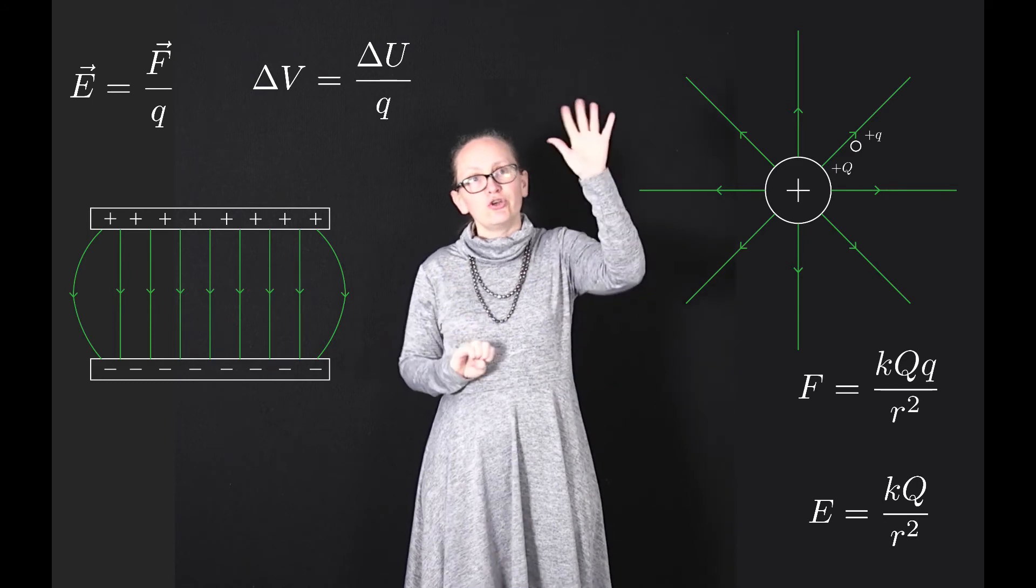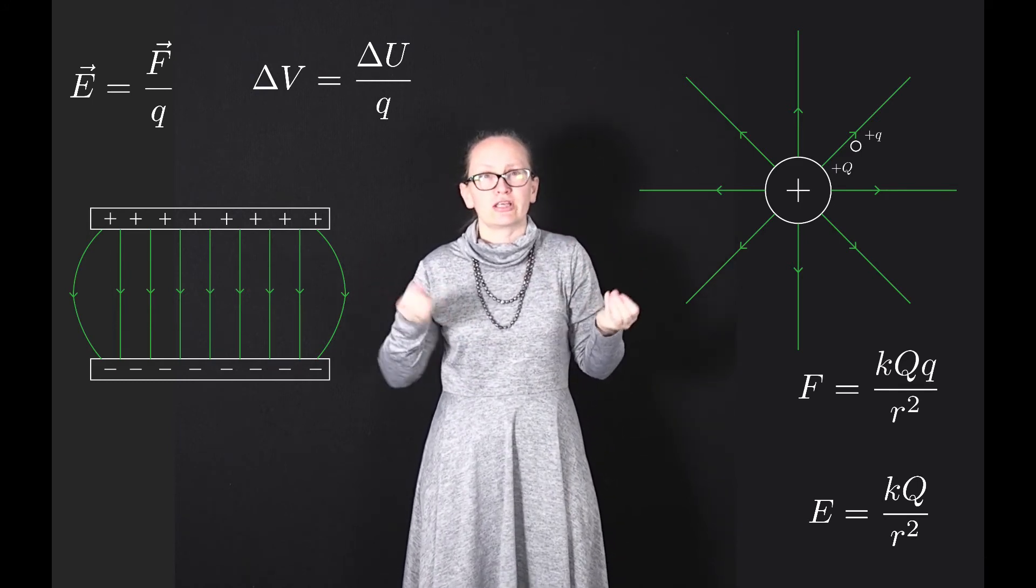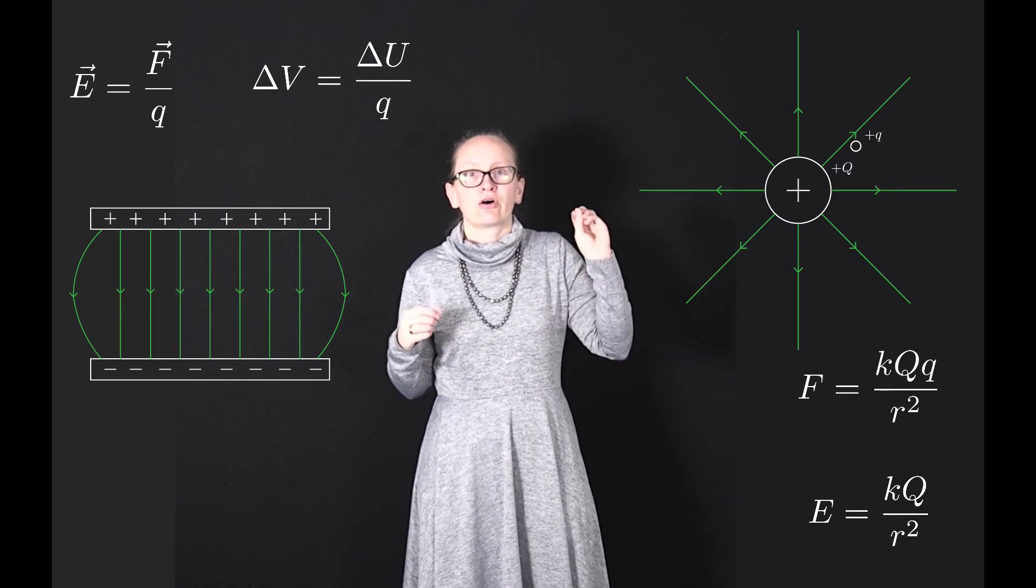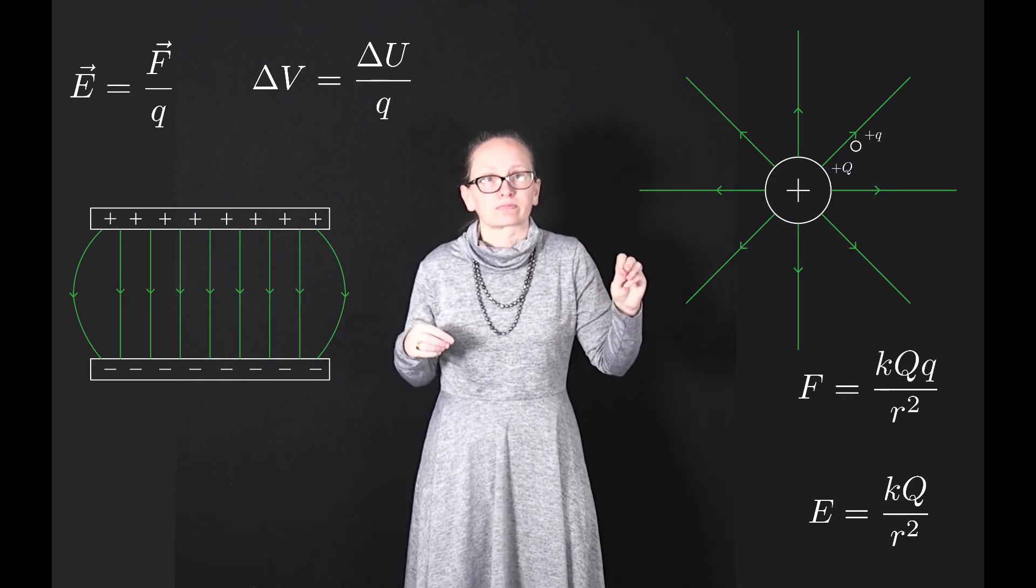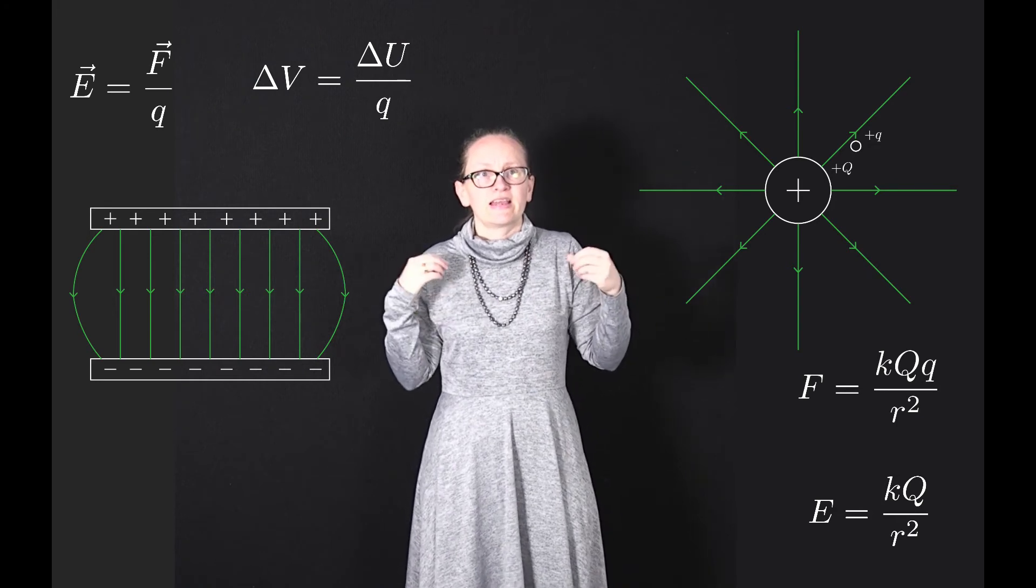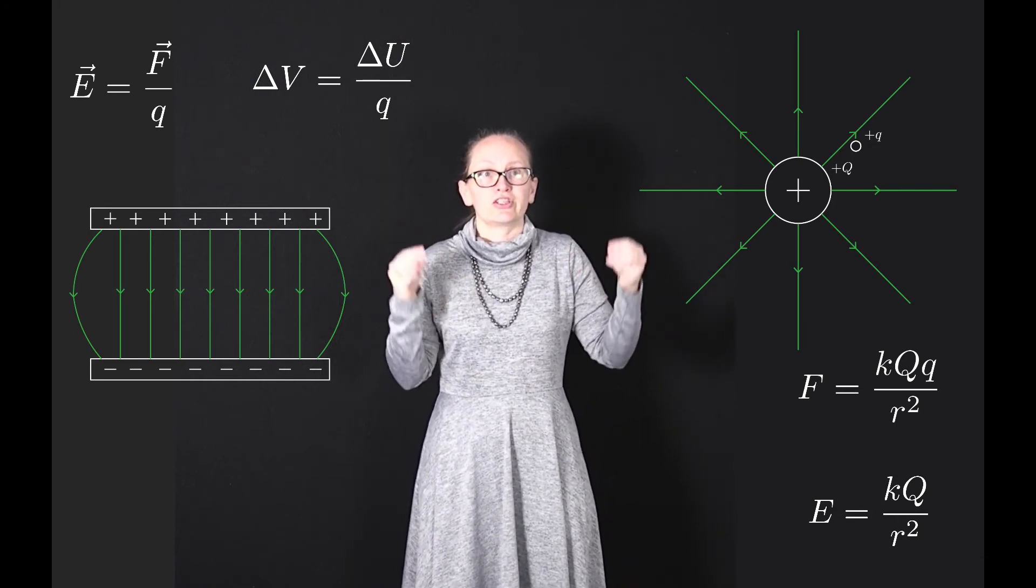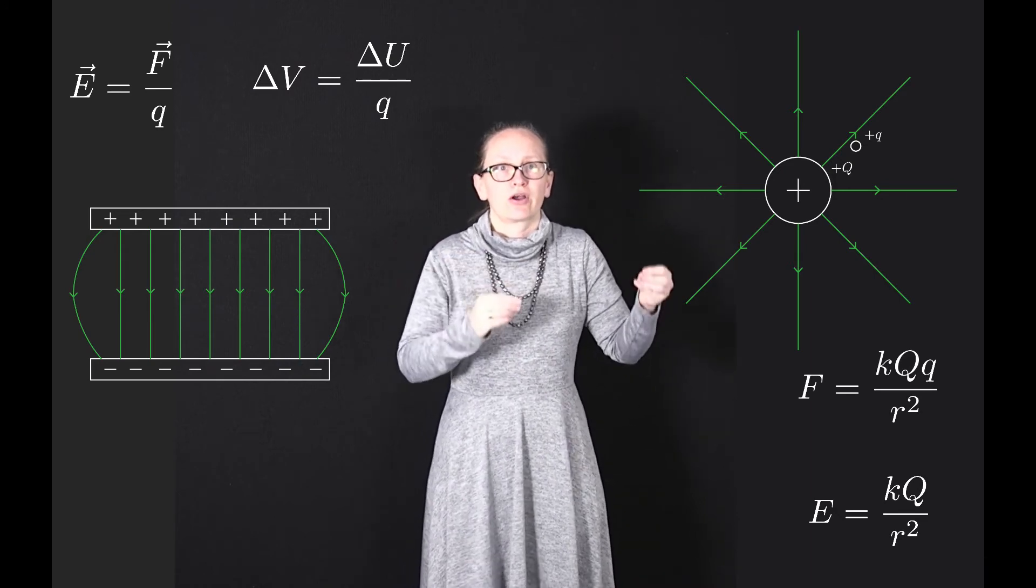V is our voltage, U is the symbol that we usually use to represent potential energy, and q is the charge on that little test particle. So what this formula is telling us is that the change in potential is just equal to the change in potential energy per unit charge.